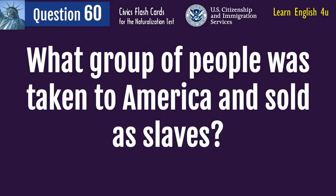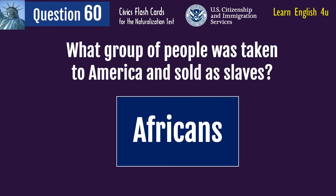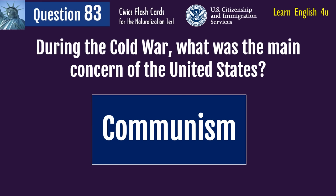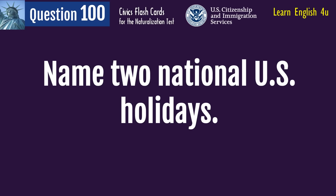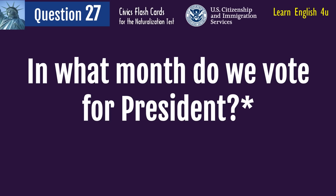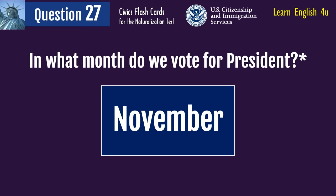What group of people was taken to America and sold as slaves? Africans. During the Cold War, what was the main concern of the United States? Communism. Name two national U.S. holidays. New Year's Day. Christmas. In what month do we vote for president? November.